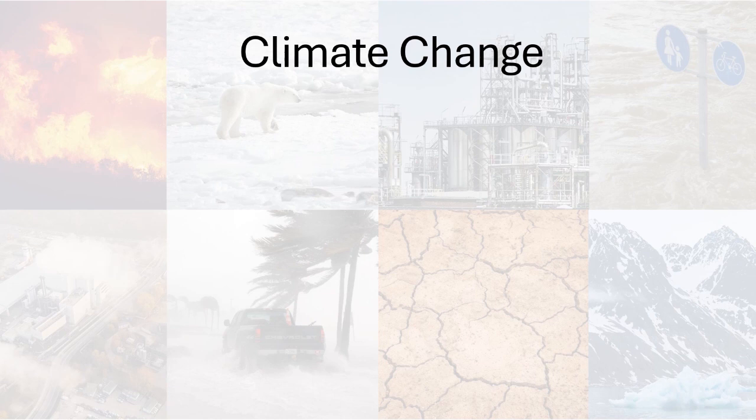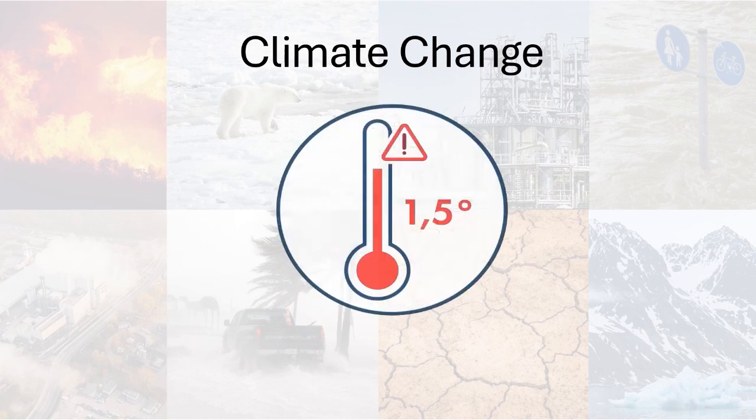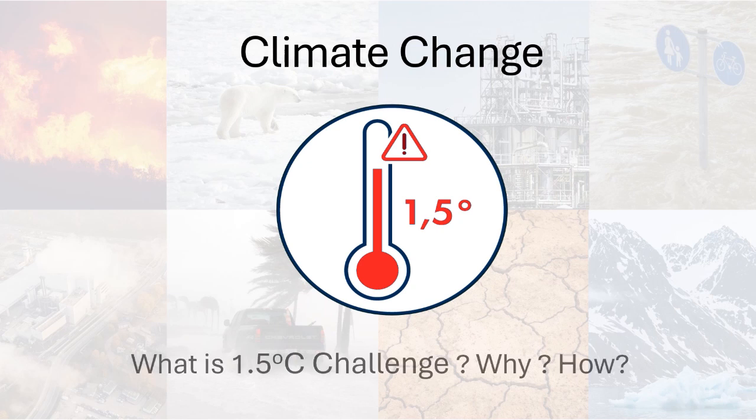You might have heard recently about limiting the Earth's climate to 1.5 degrees C or else there is a disaster waiting for us. What is this 1.5 degrees C, and why is it important, and how can it be achieved?